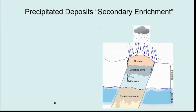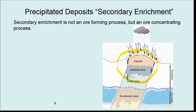A similar but different process is secondary enrichment, which is the formation of copper deposits. What we have is an initial rock — a whole seam or copper-rich mineral vein — but it's not of a high enough grade to be profitable. In many countries, especially where chemical weathering is high, rainfall leaches out the copper and it moves down to the water table where it is precipitated. This is not a copper-forming process; it's an enrichment process.